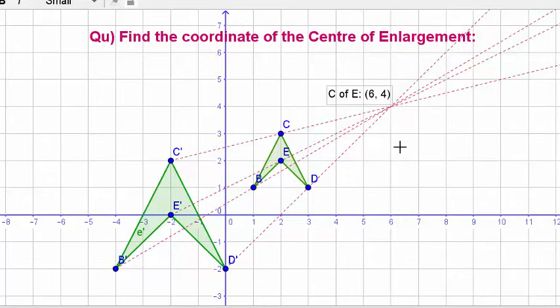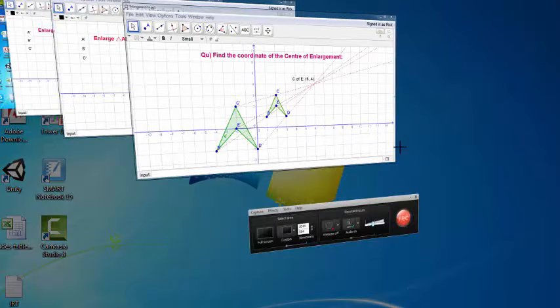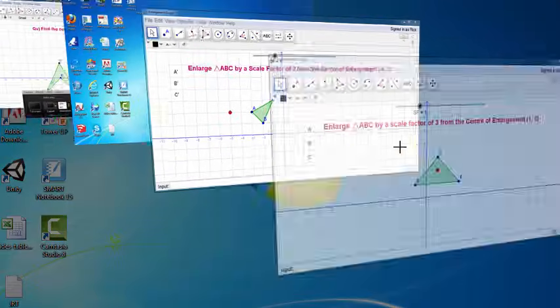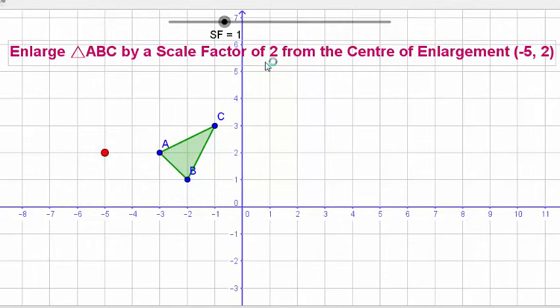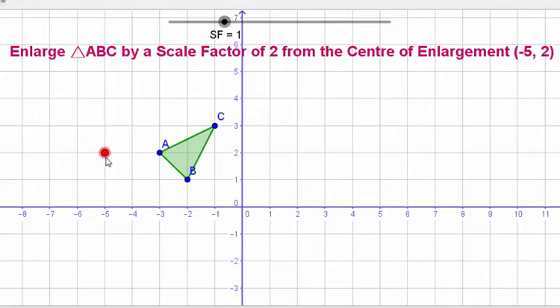So the next example, we are going to enlarge triangle ABC by a scale factor of two from the center of enlargement negative five, two. So this red dot is our center of enlargement. ABC is our object we're going to enlarge by a scale factor of two.